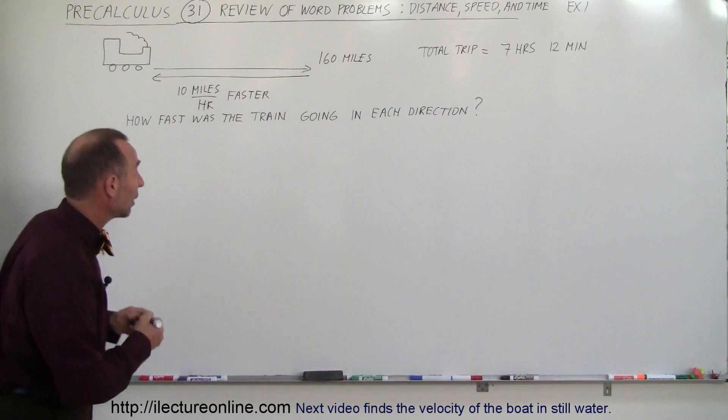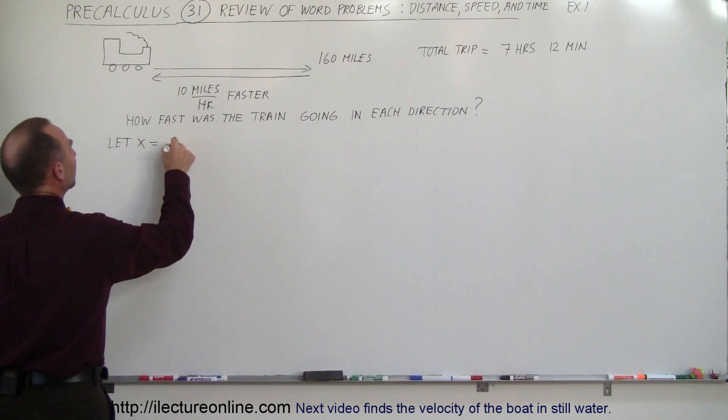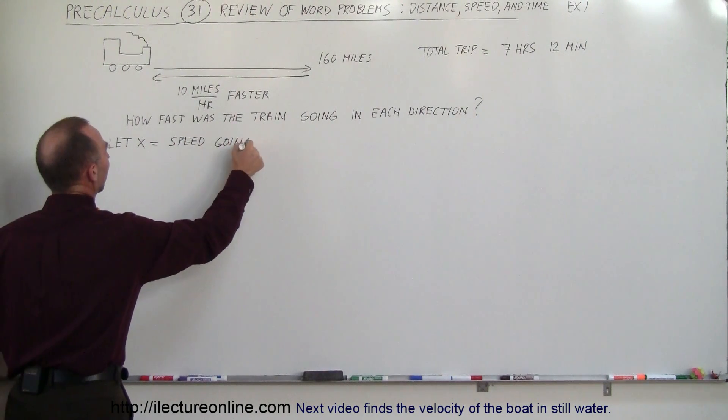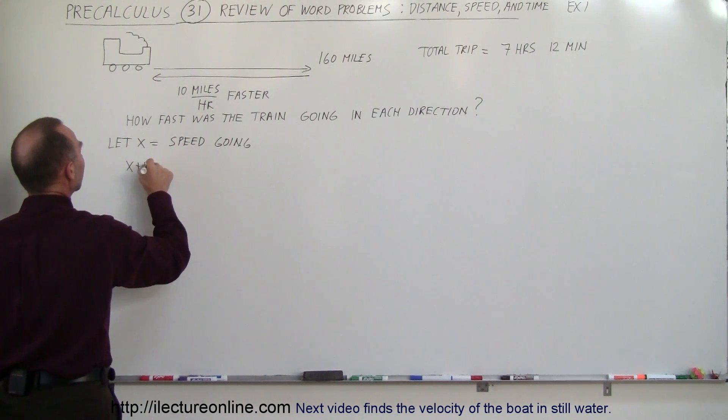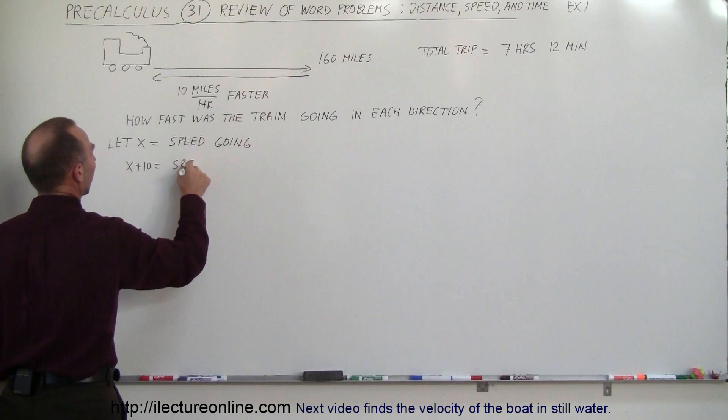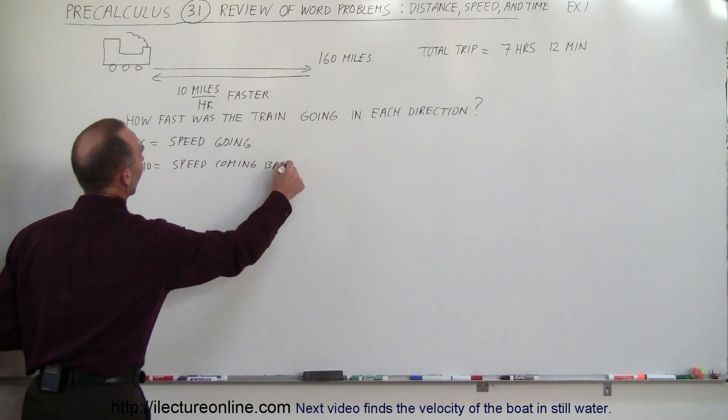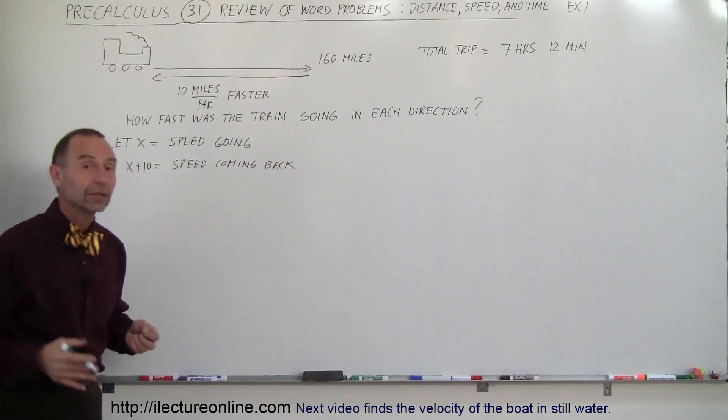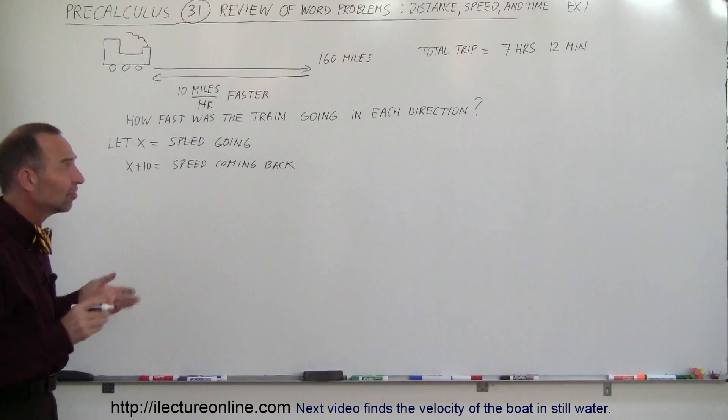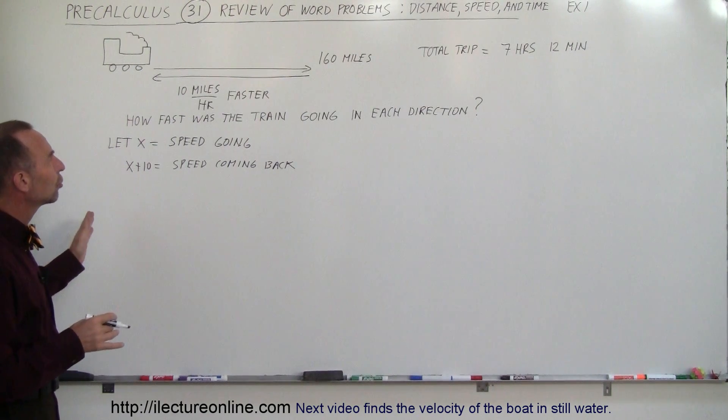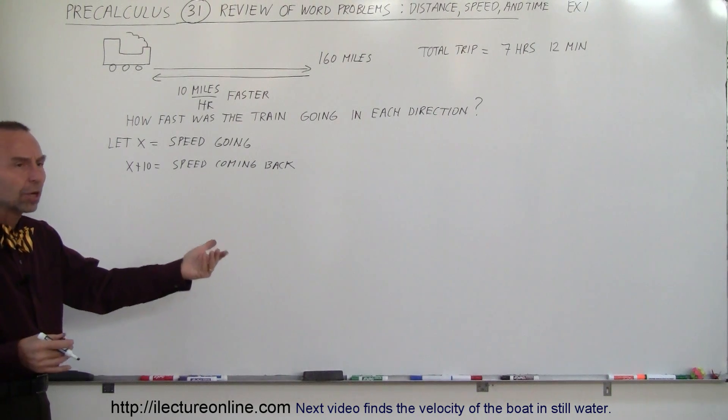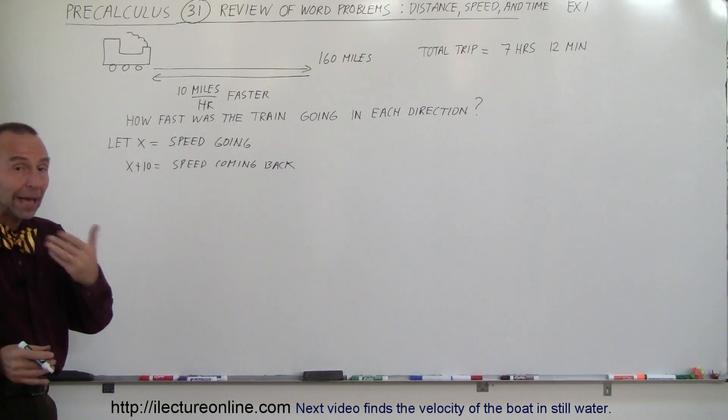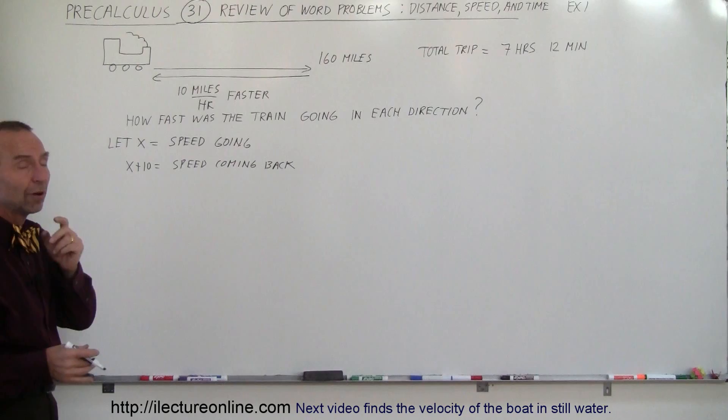Here we can say, let x equal the speed going, and then x plus 10 equals the speed coming back. One of the unknowns is how fast was the train traveling going out and coming back. The second one is we don't know how much time the train took going out and coming back, but we do know that the two added together adds up to 7 hours and 12 minutes.